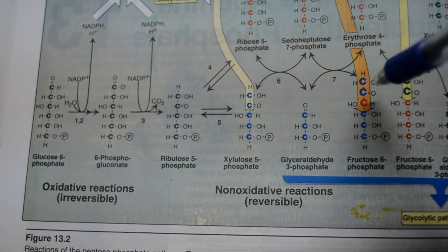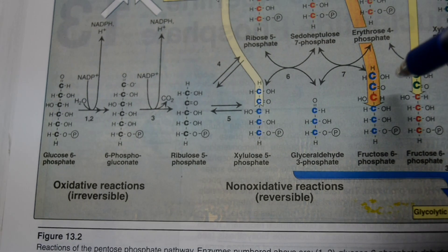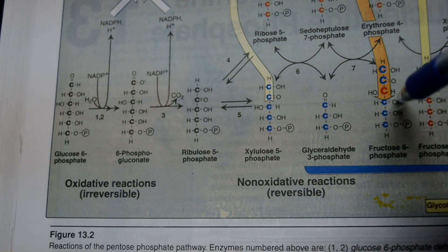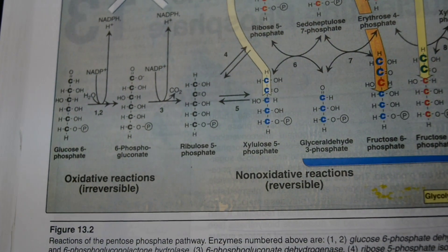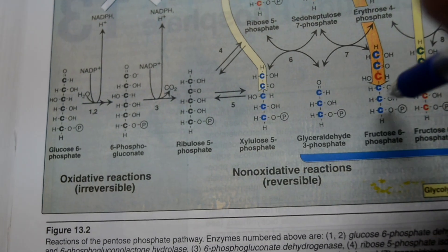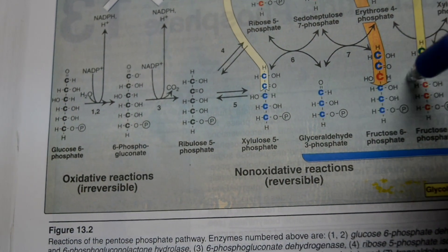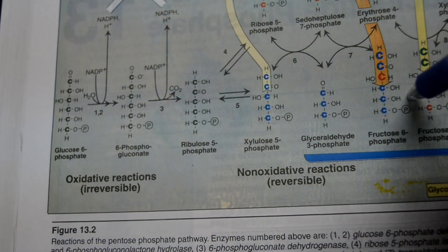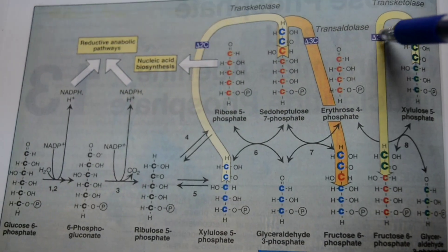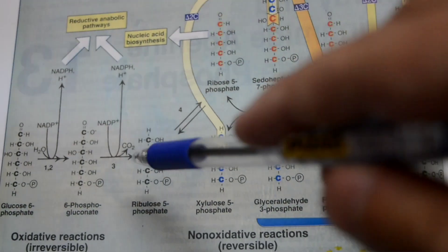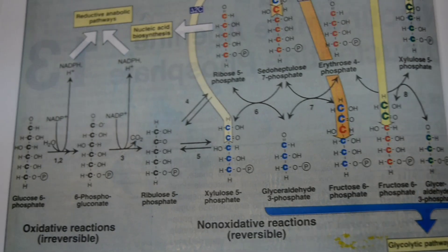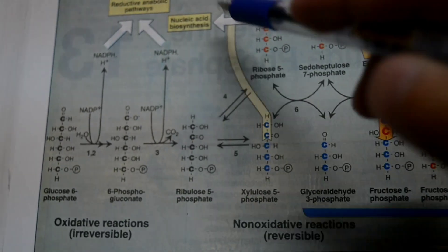Fructose 6-phosphate can convert to fructose 1,6-bisphosphate in the glycolytic pathway via phosphofructokinase 1. However, phosphofructokinase 1 is subject to product inhibition — one of those products being ATP. If ATP is present in adequate amounts, fructose 6-phosphate will not be converted to fructose 1,6-bisphosphate and glycolysis stops. Then fructose 6-phosphate becomes xylulose 5-phosphate via transketolase, and ribulose 5-phosphate is shunted to ribose 5-phosphate for DNA synthesis.